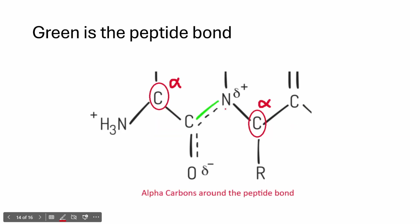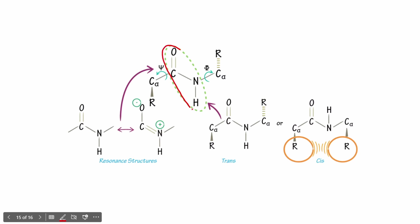The peptide bond is sandwiched between two bonds. The bond between carbon alpha and carbon prime is known as the psi bond, while the bond between carbon alpha and nitrogen is the phi bond. The alpha carbon is sandwiched between these two bonds — phi on the nitrogen side and psi on the carbon prime side — with the fixed omega plane on either side.